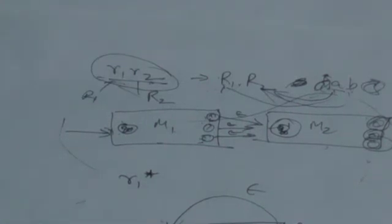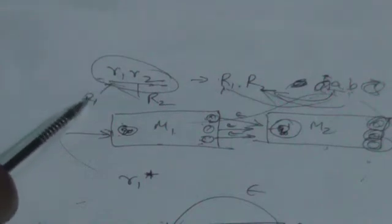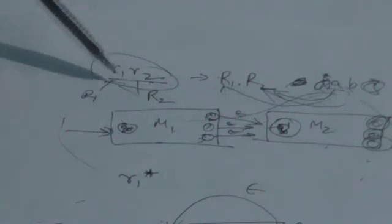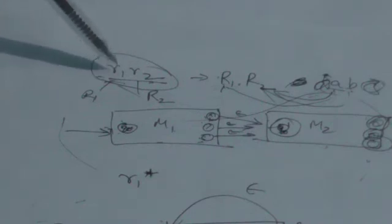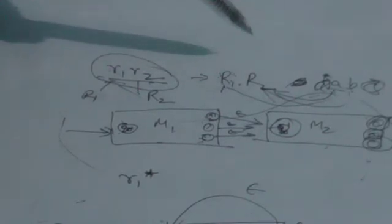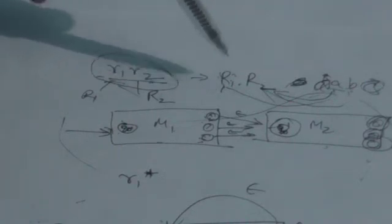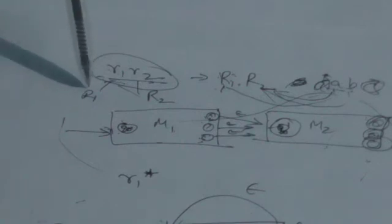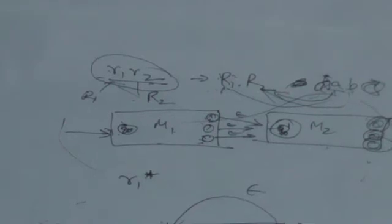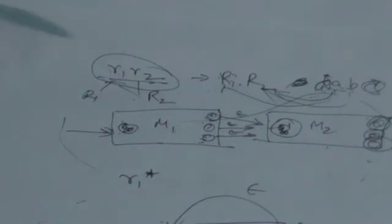Now consider the regular expression R1R2 (concatenation). Capital R1 is the regular set corresponding to R1, and capital R2 is the regular set corresponding to R2. This regular expression represents the concatenation of R1 and R2 — a set of strings formed by concatenating strings of set R1 with strings of set R2. We need to design a finite automata that accepts all strings belonging to R1 concatenated with R2.